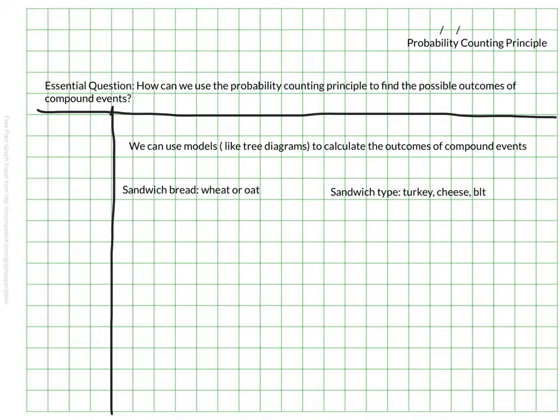In this example, let's say we want to make sandwiches, and we can use either wheat or oat bread, and we can either make it a turkey, cheese, or a BLT sandwich. So I'm going to make a tree, and you're going to make one as well, of all of the different outcomes. We're going to make a sample space here for our sandwiches.